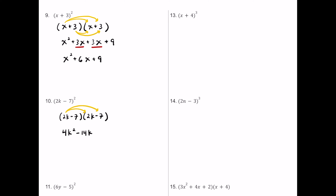Moving to the negative 7: negative 7 times 2k is another negative 14k — matching the first k term, as expected with identical binomials. Then negative 7 times negative 7 is positive 49. Combining: 4k squared, negative 14k minus 14k is negative 28k, and plus 49 as the constant.